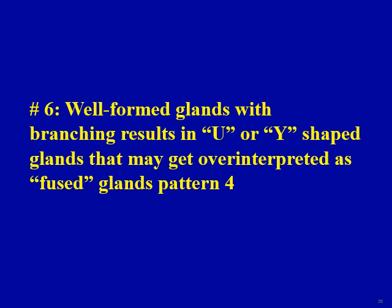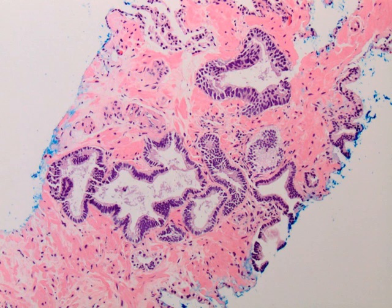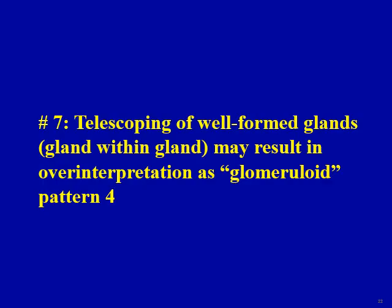Pitfall six: large well-formed glands may result in U- or Y-shaped glands that get over-interpreted as fused gland pattern 4. Here is an example — these are well-formed large glands showing a branching pattern; this is branching, not fusion, and would be graded as 3+3=6. Pitfall seven: sometimes you may see telescoping of well-formed glands, also referred to as gland-within-gland, which may result in over-interpretation as a glomeruloid pattern.